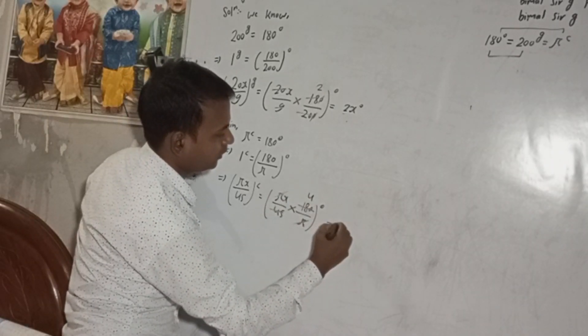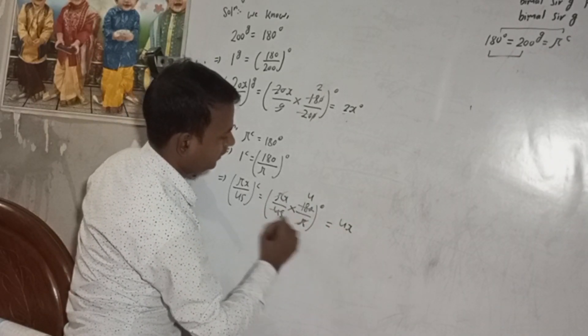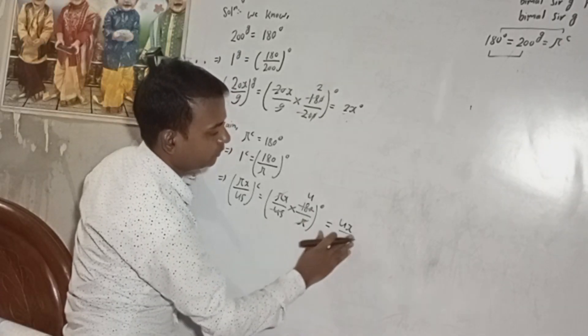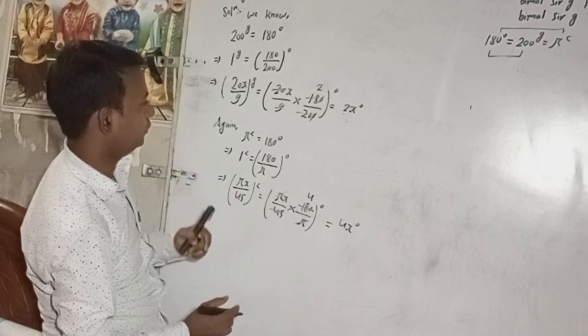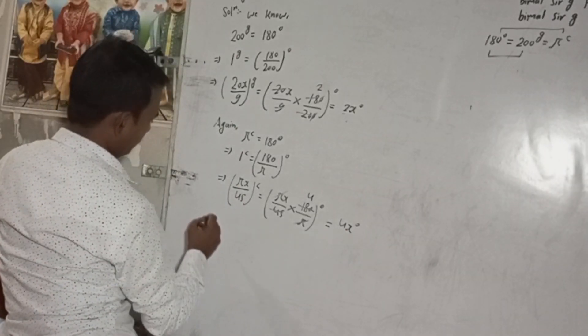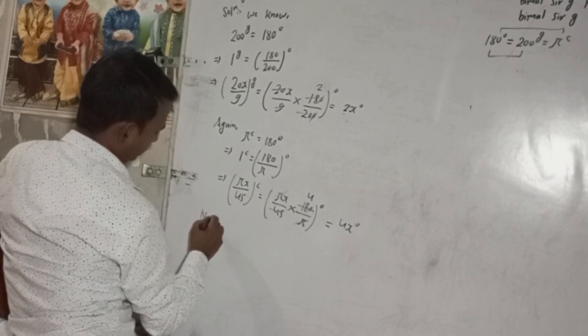Now this π and this π cancel, 45 goes into 180, so we got here, the upper part is 1, there is 4. This is 4, so 4 by 1, no need to add this 1, this is simply 4x degree.